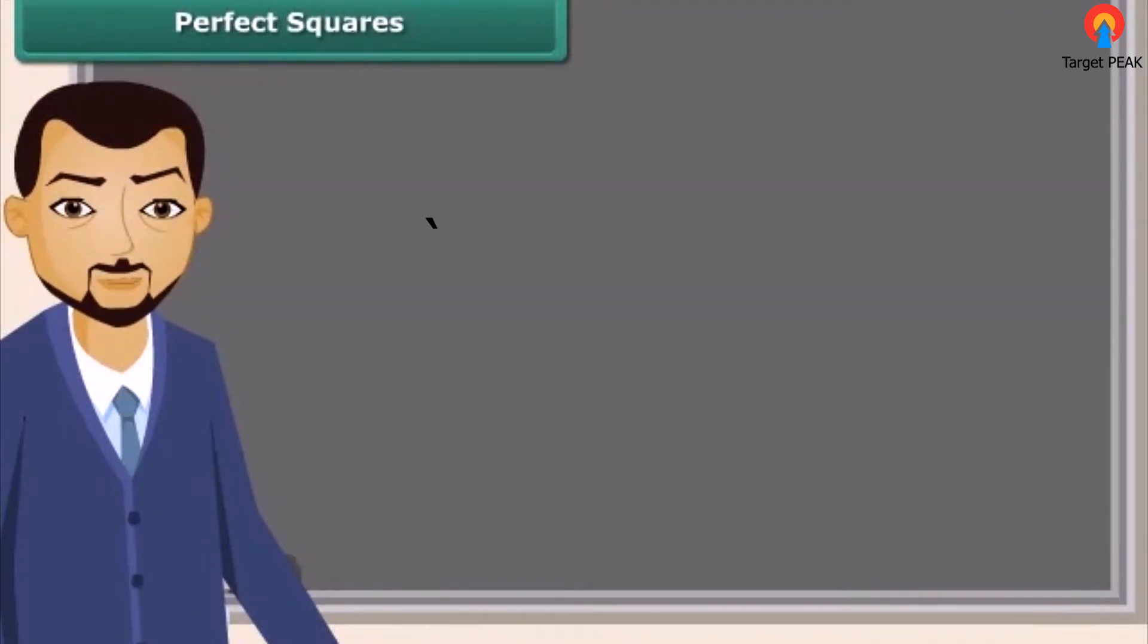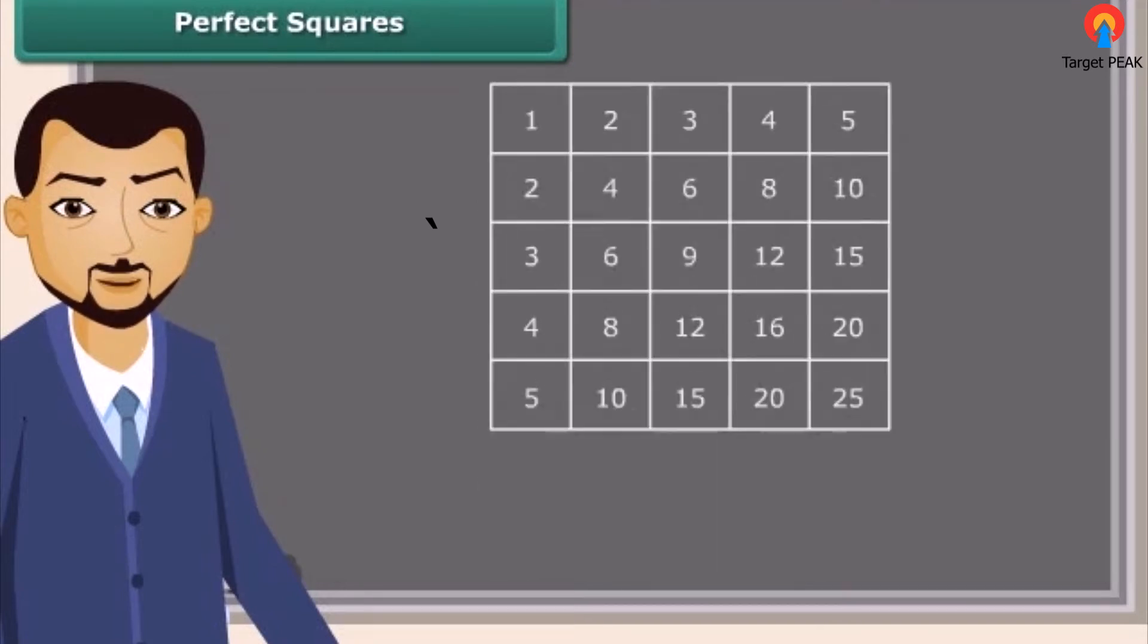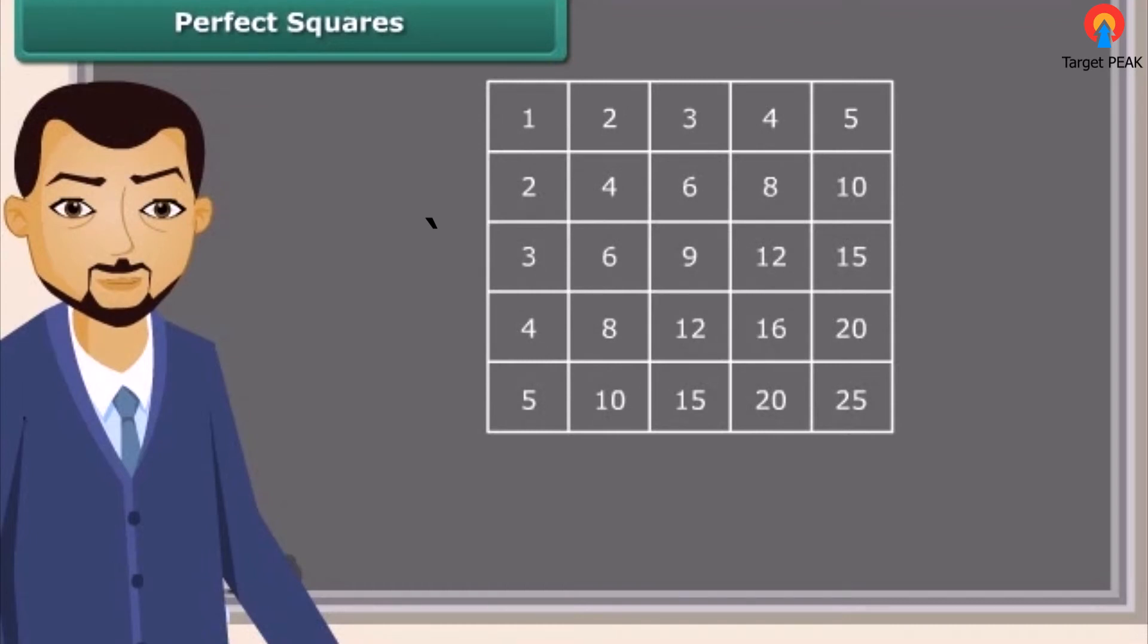Let us read. 1 square is 1, 2 square is 4, 3 square is 9, 4 square is 16, 5 square is 25 and so on. We can also find squares on the multiplication table. Do you know what do we call these numbers? They are called perfect squares. The perfect squares are the squares of the whole numbers.